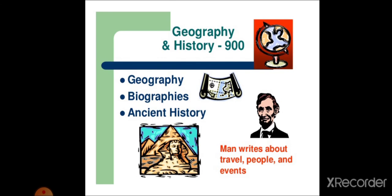Geography and history. The number is 900. Man writes about travel people and events. Geography, biographies and ancient history all comes under this category.